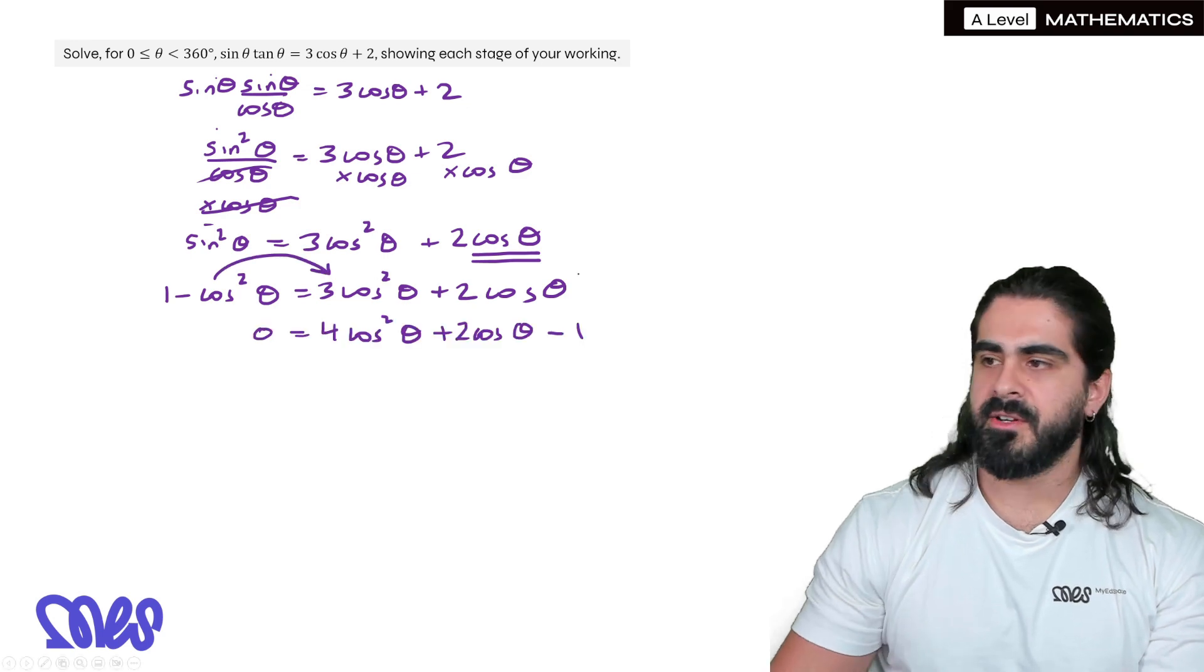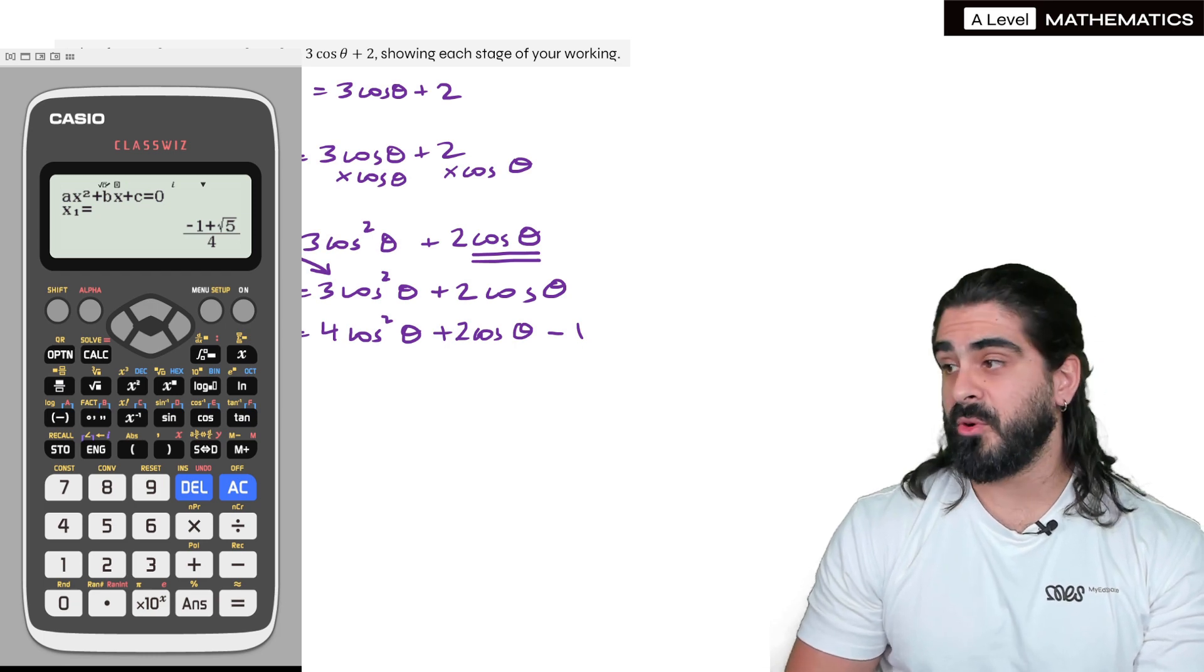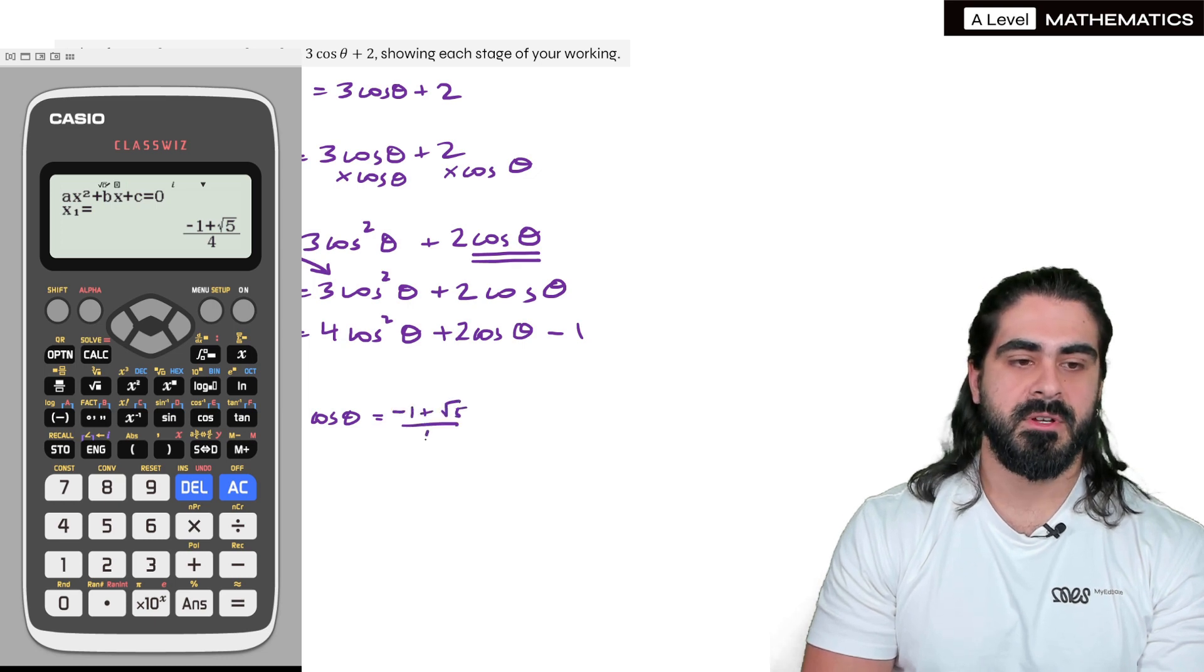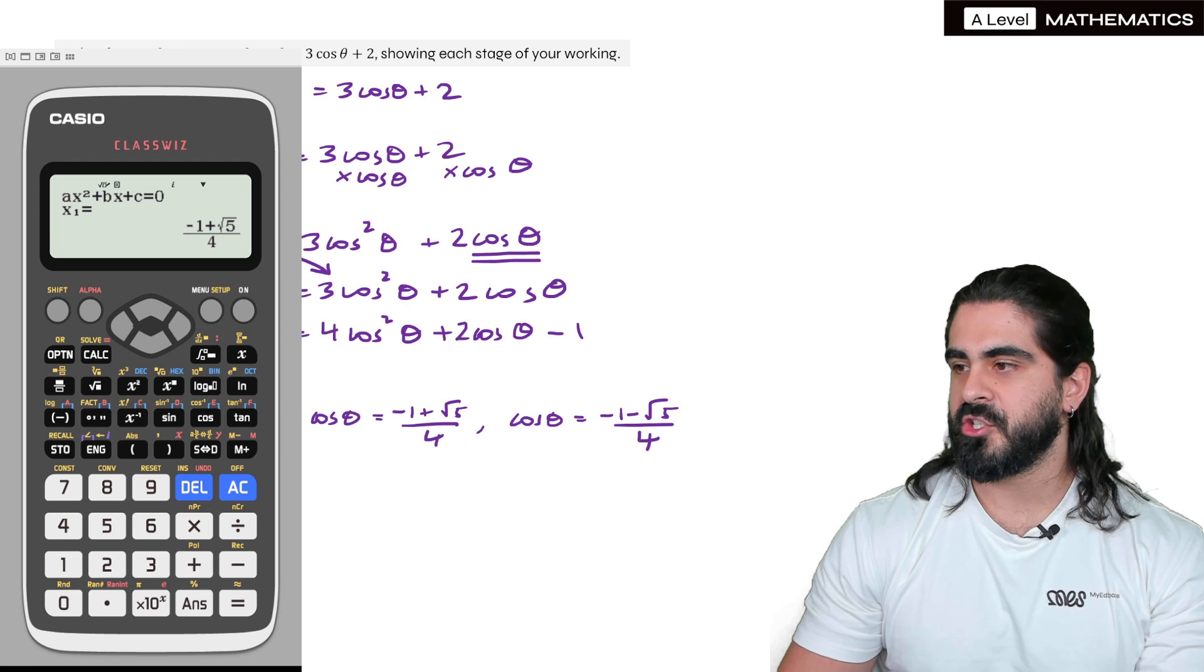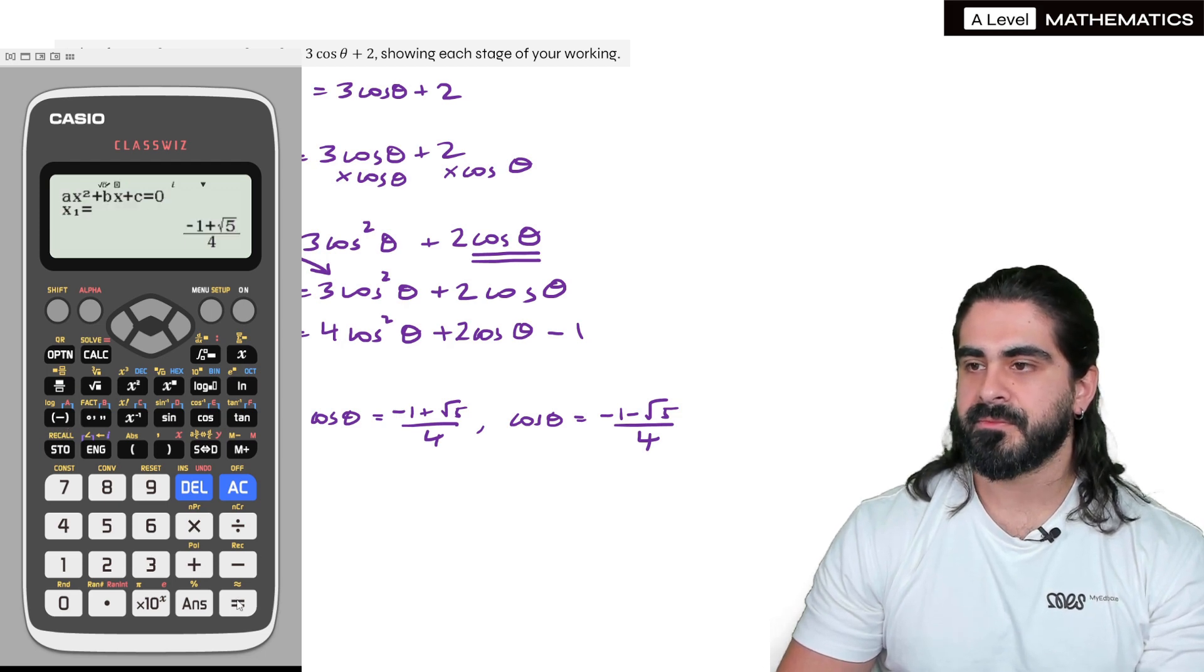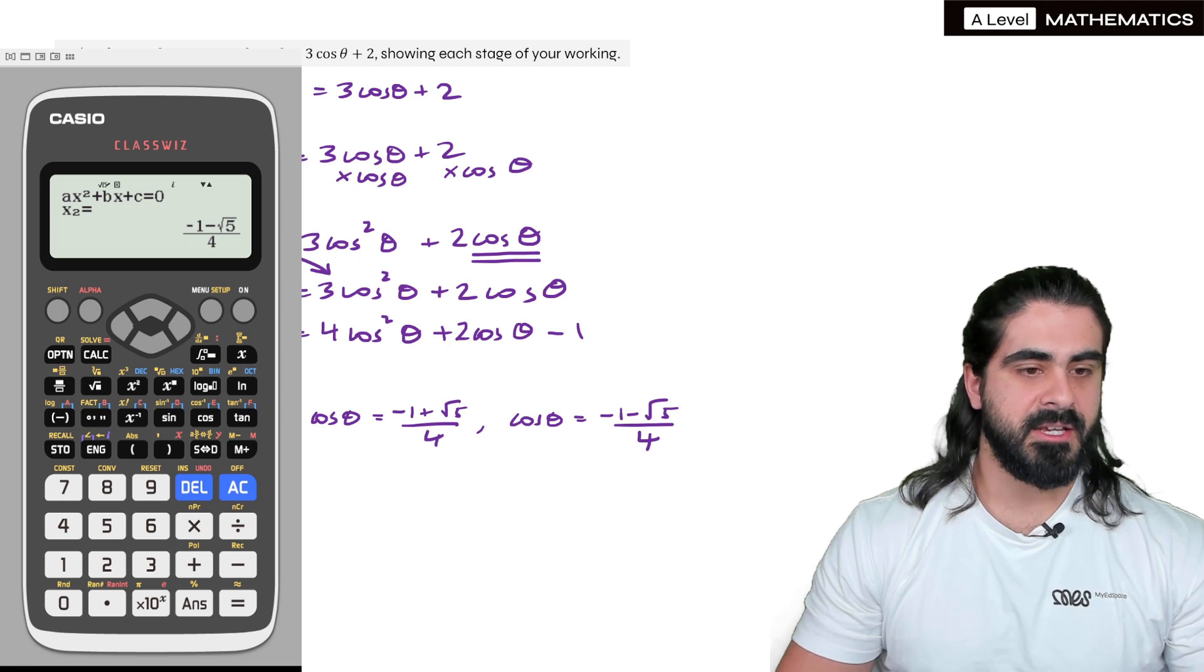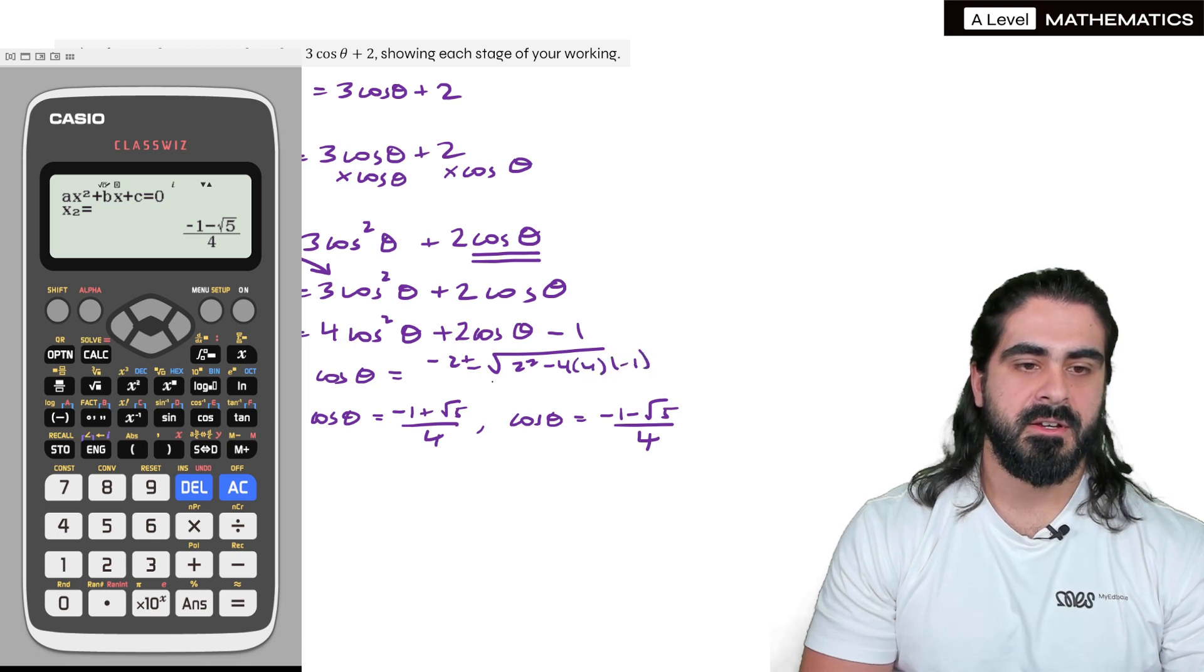So sine squared is 1 minus cos squared, which is 3 cos squared theta plus 2 cos theta. Move everything over to this side. Let's check our calculator. It's not a quadratic we can factorize. So what we're going to do is we're going to say that cos theta is minus 1 plus root 5 over 4. The other one will be cos theta is minus 1 minus root 5 over 4. Now we should store these. It just makes life a bit easier. This we're going to press store A. And then the other one, we're going to store that as B. So instead of doing inverse cos of typing all that in, we've stored it as A and B. Now what we would do here is make it look like we did the quadratic formula: cos theta equals minus B plus or minus B squared minus 4AC over 2A.